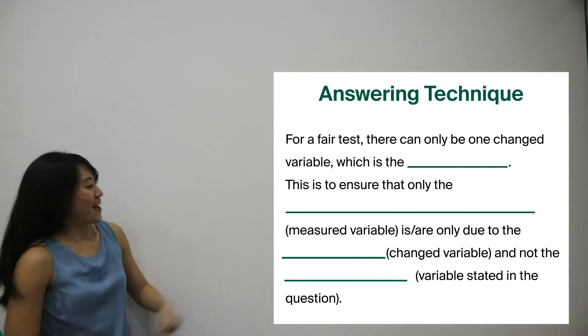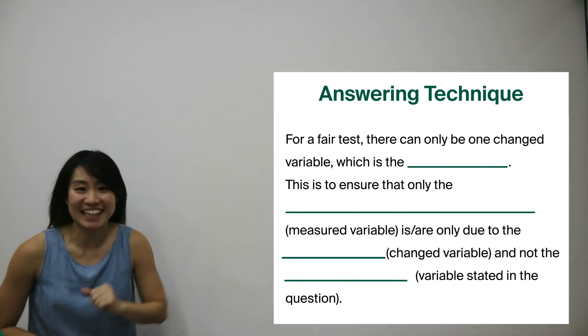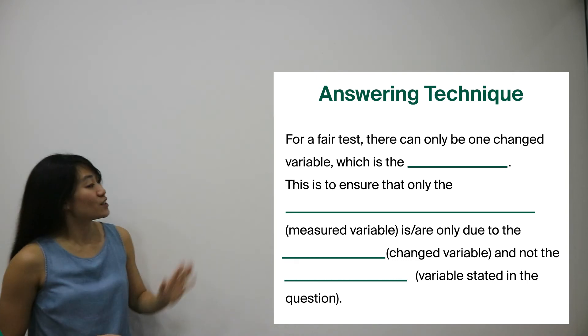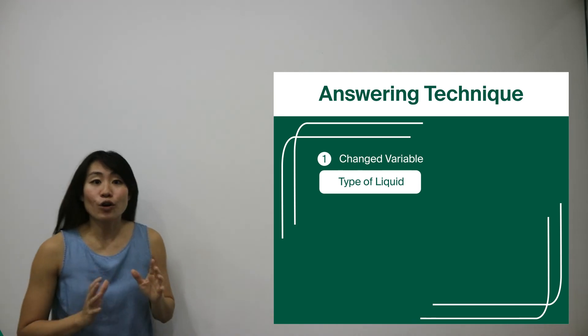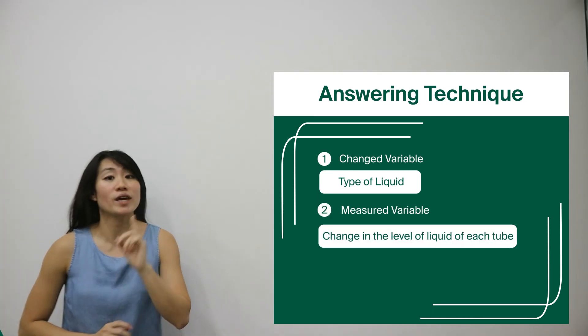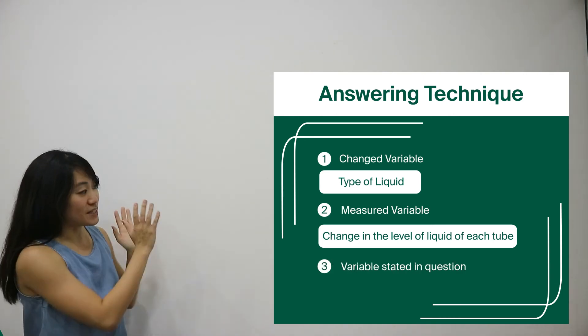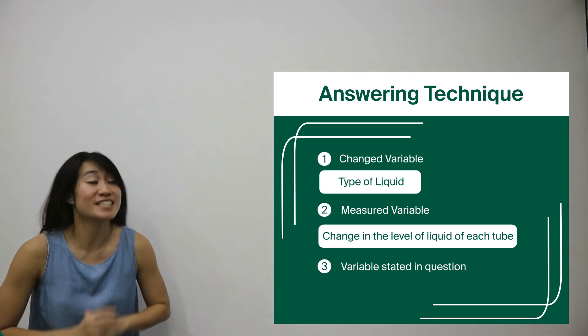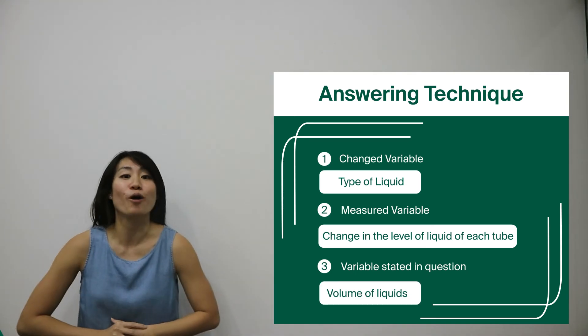So here you have it. All you have to do is to work this answering technique. Now first you have to identify the change variable which is the type of liquid, followed by the measured variable which is the change in the level of liquid in each tube, and finally the variable that has been stated in the question which is either the amount of liquid or the volume of liquids.